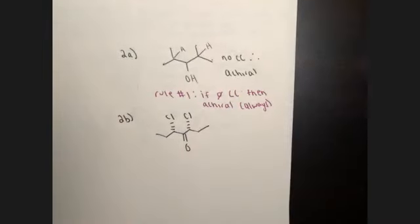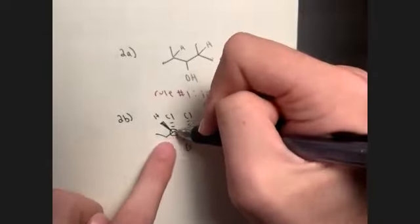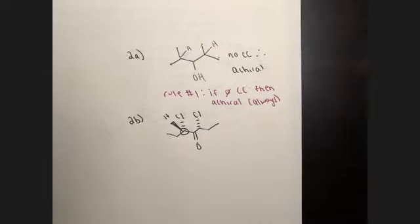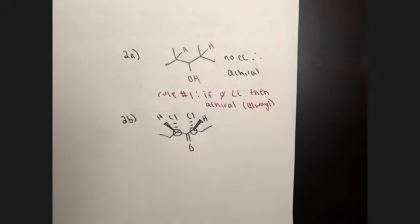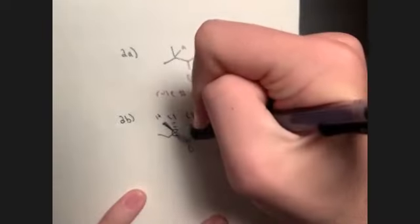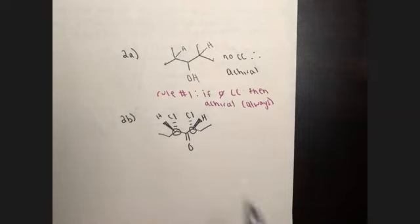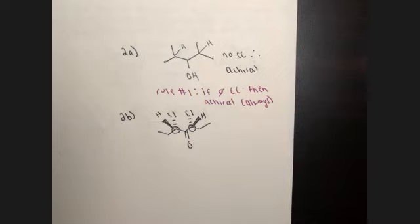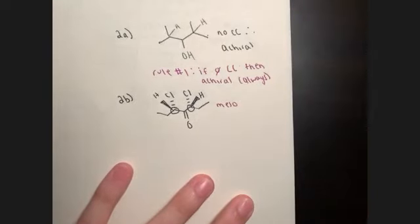Example 2b has two chiral centers — I can imagine the hydrogen on a wedge, chlorine on a dash, ethyl group to the left, and a ketone side to the right. Both centers are present. If these two chiral centers are symmetrical, one side rotates light to the left and the other to the right, canceling out. This is called meso.